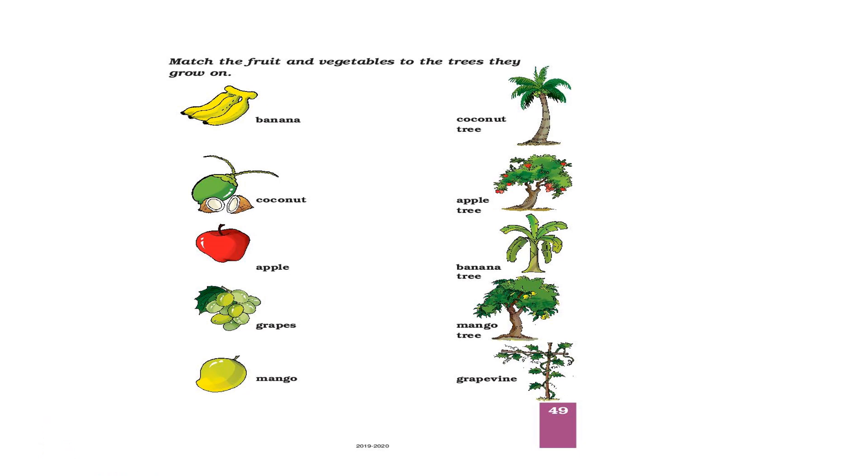What is this? Yes, these are bananas and banana has to be matched with banana tree. Okay, so what is the next one? Next one is a coconut. Coconut has to be matched with coconut tree.